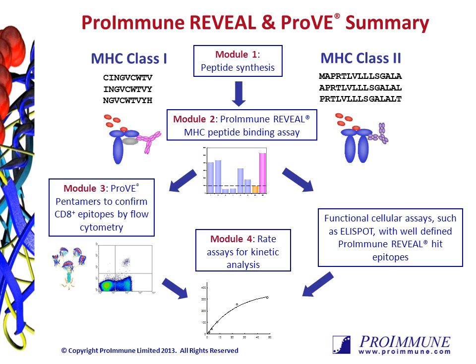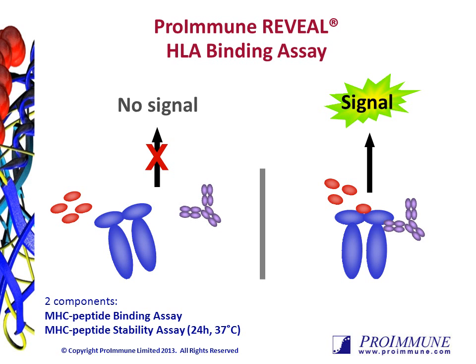Long off rates are indicative of good T cell epitopes. The principle behind the assay is that recombinant MHC molecules are incubated with individual test peptides. Upon binding of the peptide to the MHC complex, a conformational change of the MHC takes place, measured by a conformation-specific antibody in a quantitative immunoassay. The first component is the Module 2 binding assay, measuring assembly of the peptide to the MHC. The second is the Module 4 stability assay, in which complexes are heated to 37 degrees centigrade for 24 hours and the remaining complex is quantified.